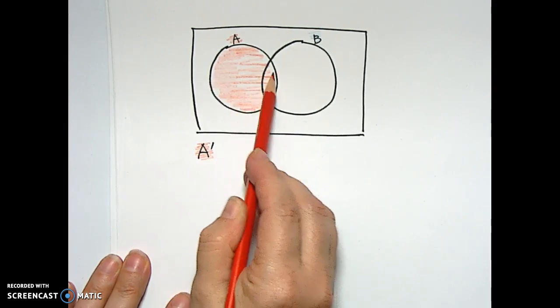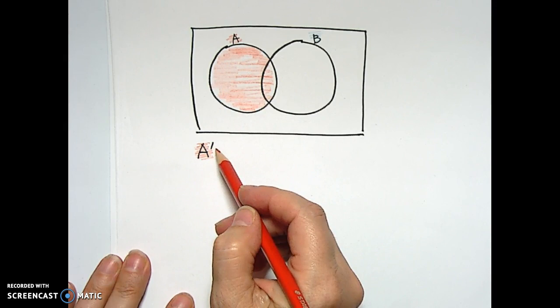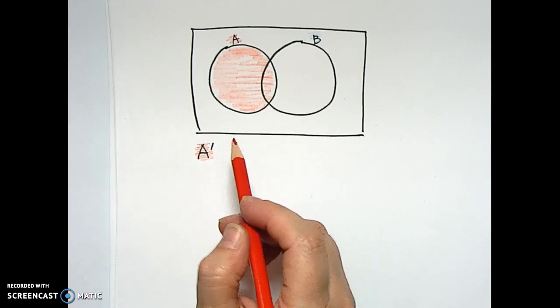And what it means is not. So what I'm shading right now is A, and this says A not. So I'm going to shade A not next.